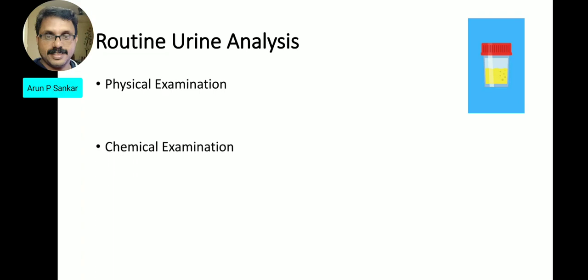Routine urine analysis has three components: first, physical examination of urine; second, chemical examination; and third, microscopical examination.